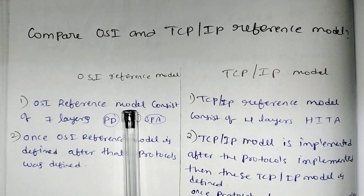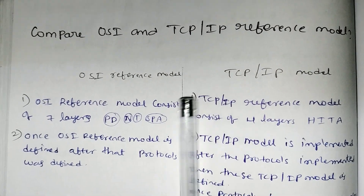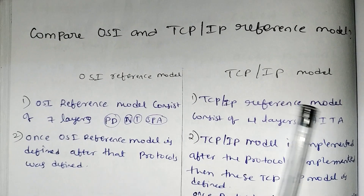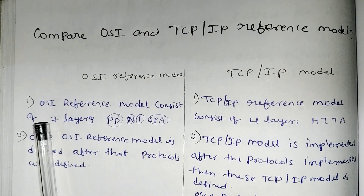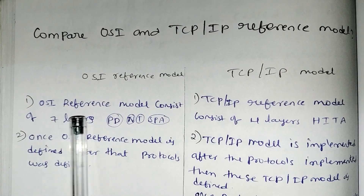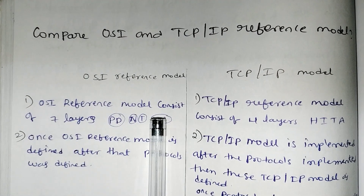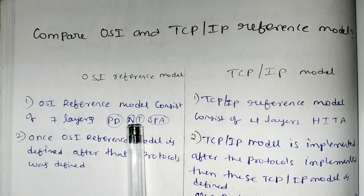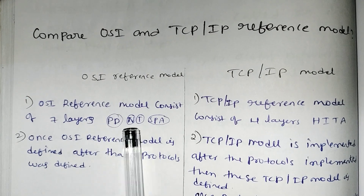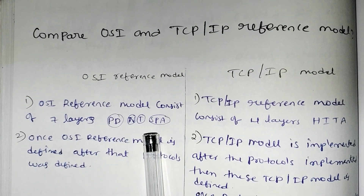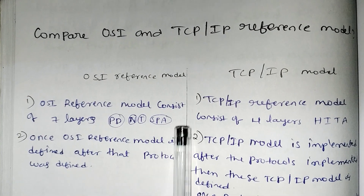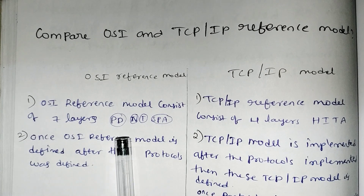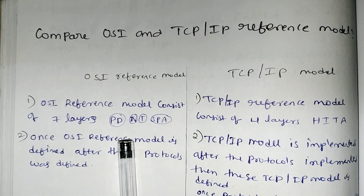Now, OSI reference model versus TCP/IP model. OSI reference model consists of 7 layers.